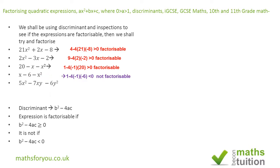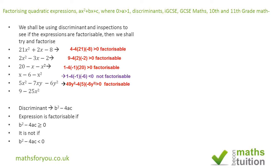Now be very careful here because the coefficient of x squared is 5, the coefficient of x is minus 7y, and the constant value is 6y squared. Applying the discriminant test again, we find that this can be factorized. The 49y squared comes from squaring 7y, and it does not matter what value y takes — we will always have a positive result because y is squared. So this expression can be factorized.